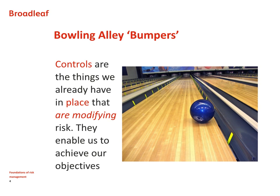I see controls very much as the bumpers which are erected down the side of bowling alleys for children and even their fathers and mothers, to help them get a strike or at least get the bowl down to the other end of the alley without it going into the slot. They provide the bounds inside which behaviour is acceptable. Controls are very much linked to objectives — they're there to enable us to achieve our objectives. If we can describe our objectives, we can understand risk and therefore define what are the most appropriate controls to have in place.